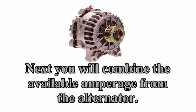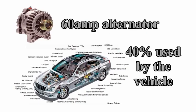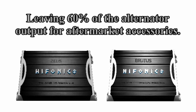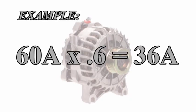Next you'll combine the available amperage from the alternator. We will assume that you have a 60 amp alternator and 40% of that is used by the vehicle for normal use, leaving 60% of the alternator output for aftermarket accessories. Your example is 60 amps times 0.6 equals 36 amps.